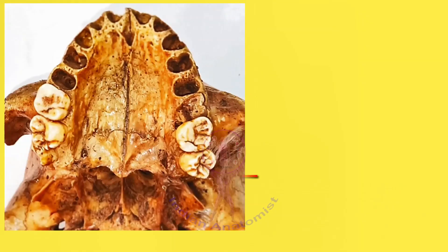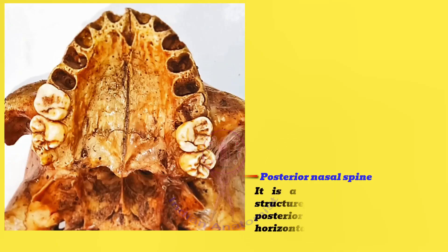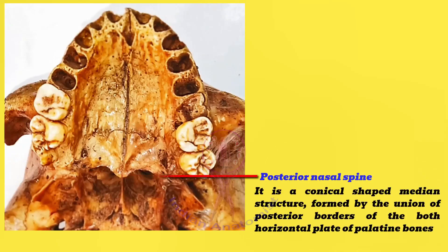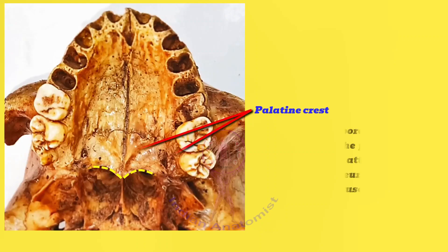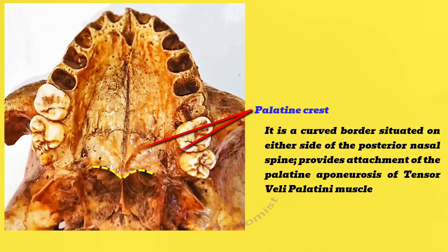The posterior nasal spine is a conical-shaped median structure formed by the union of the posterior borders of both horizontal plates of the palatine bone. The palatine crest is a curved border situated on either side of the posterior nasal spine, providing attachment for the palatine aponeurosis of the tensor veli palatini muscle.